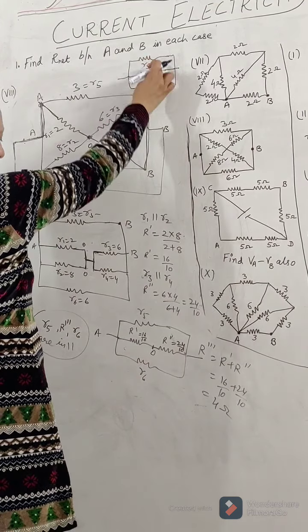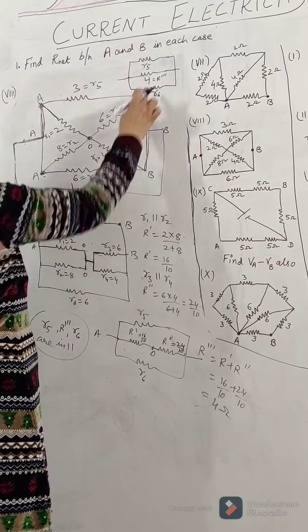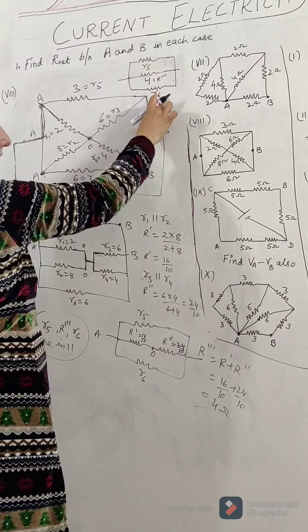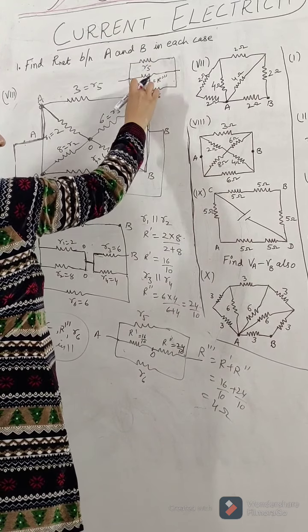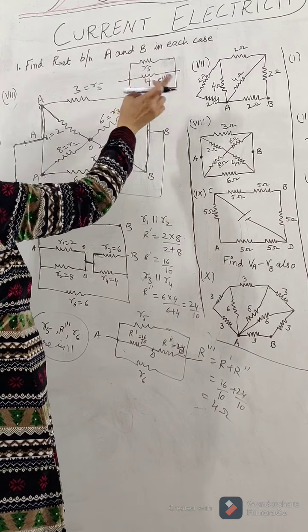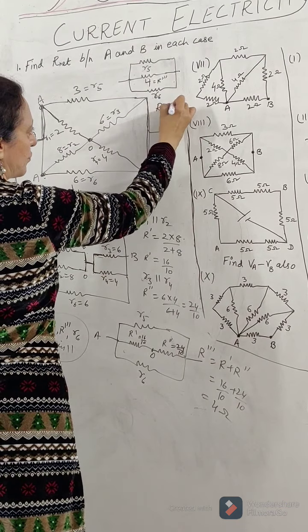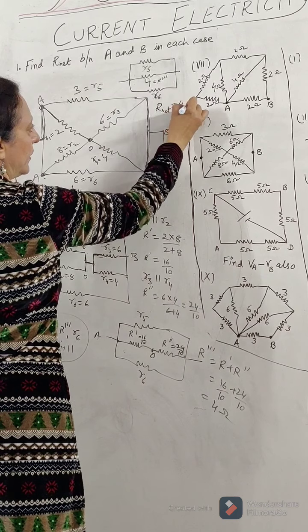You can also simultaneously solve like R5 and R6. R5 was basically 3, R6 was 6. 3 and 6 in parallel, the resultant is 2. This 2 is again in parallel with 4, so 2 and 4 resultant is 2 into 4 by 2 plus 4, which is 8 by 6. So the final answer comes out to be equal to 4 by 3 ohm.